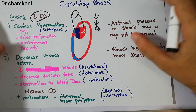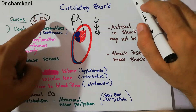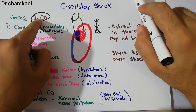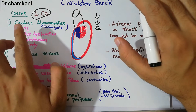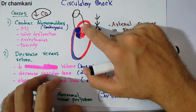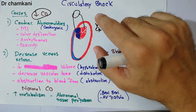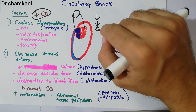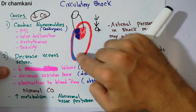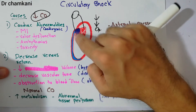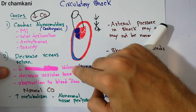Another category of conditions leads to decreased cardiac output but there is no problem in the heart. The heart is normal and can pump normally with no toxicity, but there is decreased venous return — the cardiac output is decreased because blood is not properly returning to the heart.